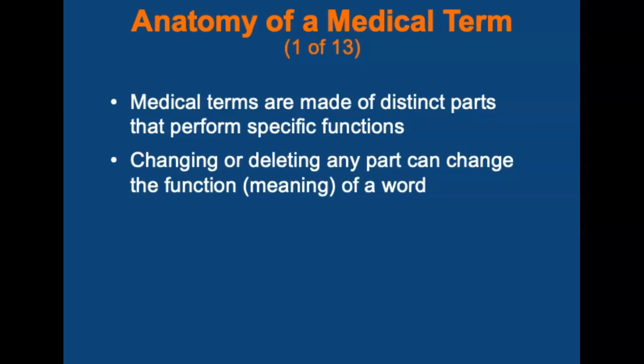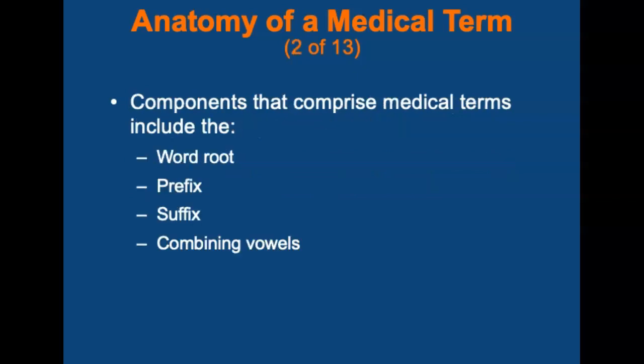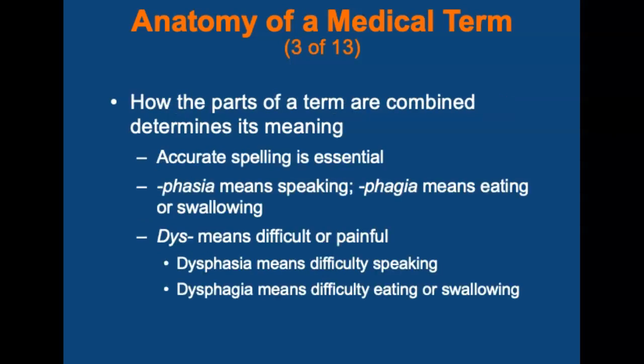Let's talk about the anatomy of a medical term. Medical terms are made of distinct parts that perform specific functions. Changing or deleting any of those parts can significantly change the function or meaning of the word. Components that comprise medical terms include the word root, which is the foundation of the word; the prefix, which occurs before the word root; the suffix, which occurs after the word root; and combining vowels, which join one or more word roots to other components of a term. How the parts of the term are combined determines its meaning.